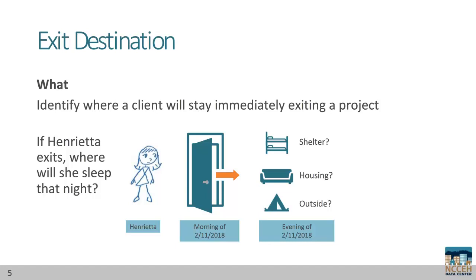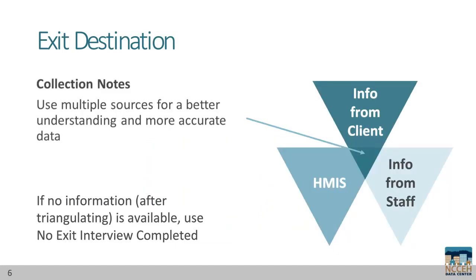HUD acknowledges this can be difficult and gives us some tips. Unlike some of our other data elements, exit destination can be gathered through multiple sources of information to triangulate the accurate response. The best case is that clients meet with staff before leaving the project and can identify where they're going that evening. However, sometimes that's not possible. Use multiple sources to get the most accurate response: the client can be contacted later, staff can be consulted, and HMIS can be reviewed after the exit to update the destination. If there is still no information after trying these three sources, use the response 'no exit interview completed.'